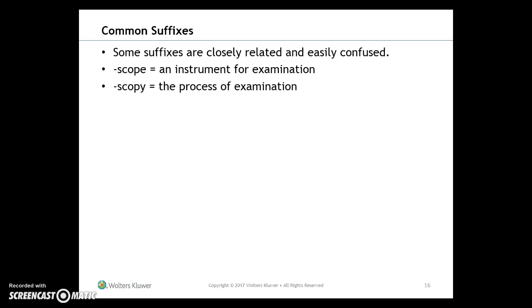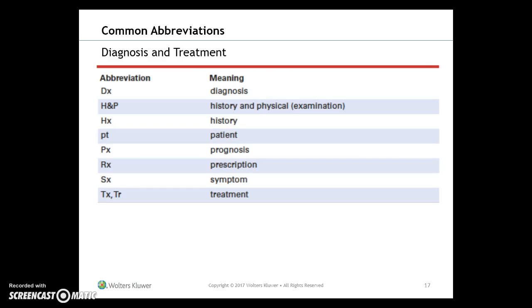Some suffixes are very closely related and easily confused. For example, -scope means an instrument for examination, whereas -scopy means the process of examination. A gastroscope is an instrument used for examining the stomach, while gastroscopy refers to the actual examination using the gastroscope. A good understanding of these now will lead to less confusion and easier memorization later on. Common abbreviations will be covered in the next section.